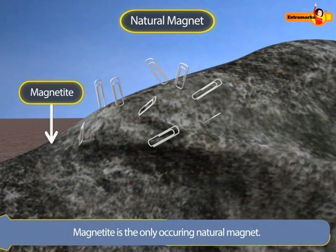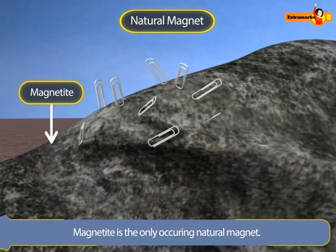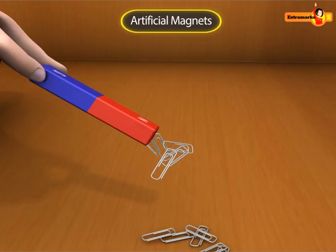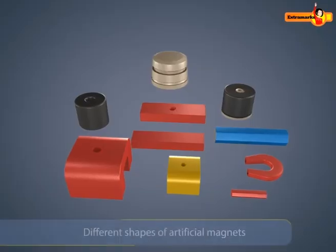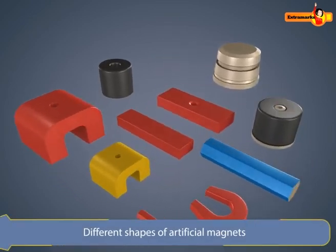Artificial magnets are those objects to which magnetic properties are imparted by artificial ways. They are of different shapes depending upon their applications.